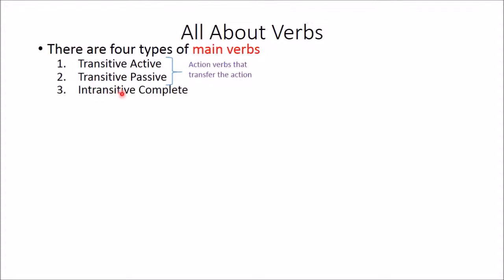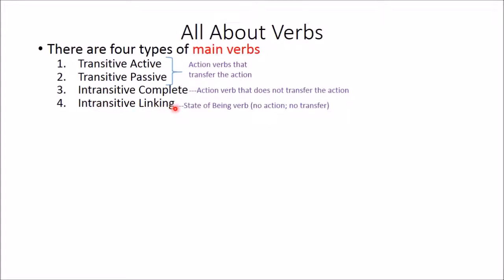Here is another verb type: intransitive complete. This is the third action verb and it does not transfer its action — we know that because of the 'in' in front of 'trans.' 'In' means not. The most recent type we've learned is intransitive linking. This is the only main verb that does not show action. This verb shows states of being, and since there is no action, there's also no transfer of action.